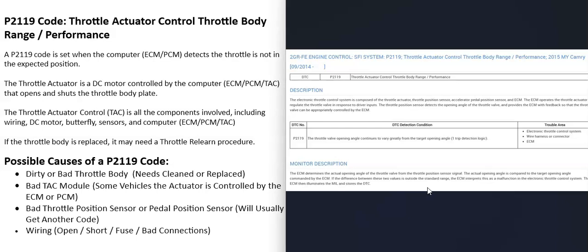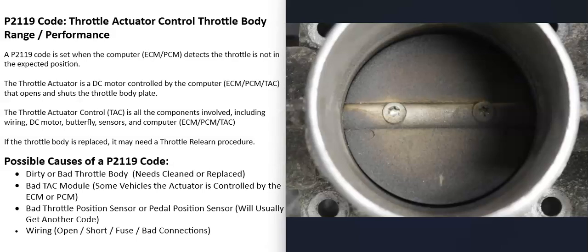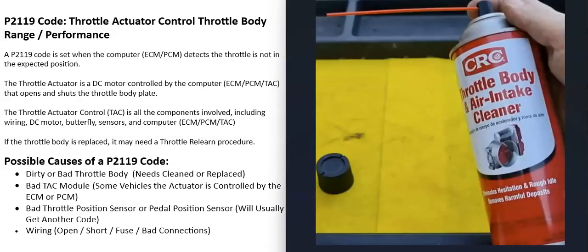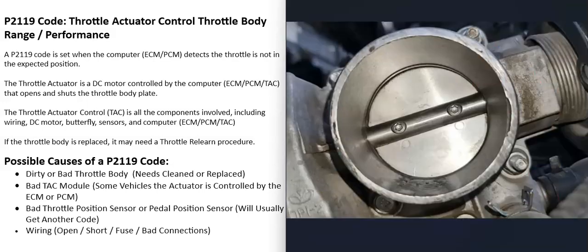One possible cause of a P2119 code is a dirty or bad throttle body. It is very common for throttle bodies to get a lot of build-up on them, and if that happens it can throw off all the sensors. If your throttle body looks really dirty, get some throttle body/air intake cleaner, spray inside, and clean it up well. Quite often that does solve a lot of issues, so it's worth trying.